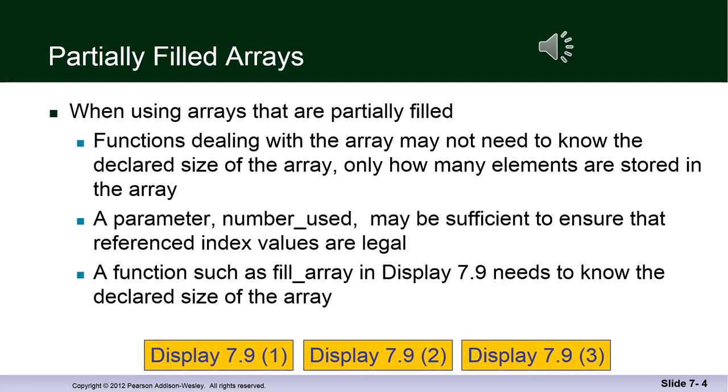Often you're going to use arrays that are partially filled. In other words, their capacity is not totally used. You might have an array of size 100 and you'll never store 100 index variables in those locations. So functions dealing with the array may not need to know the declared size of the array, but instead, only how many elements are stored in the array during that particular run of the program. So a parameter, for example, number_used may be sufficient to assure that the reference index values are legal and or contain valid data for that run.